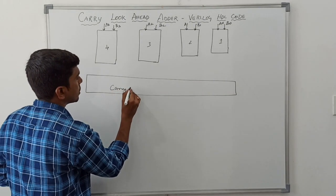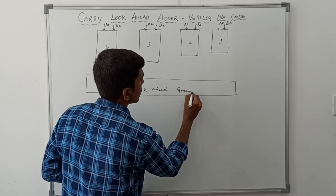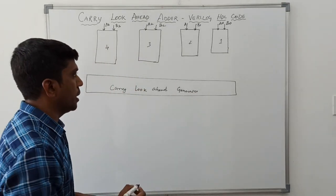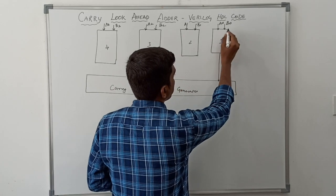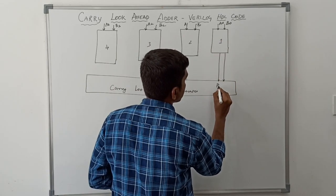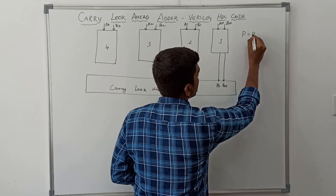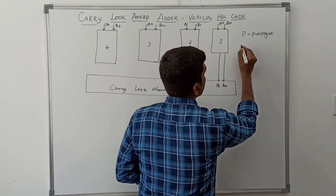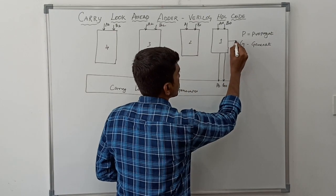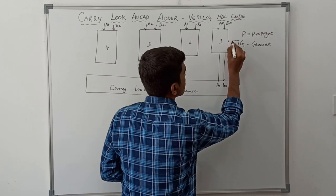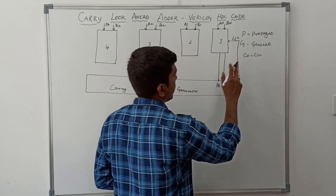The carry lookahead generator block generates the carry values. The inputs A0 and B0 generate two outputs named P0 and G0, where P0 represents propagate and G0 represents generate. The carry input C0 is equal to Cin — both values are the same.